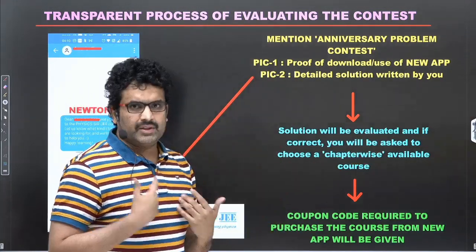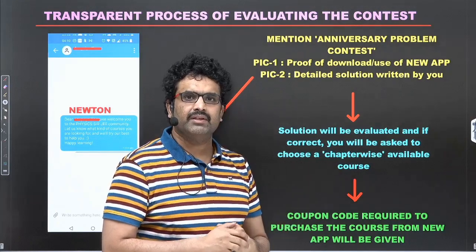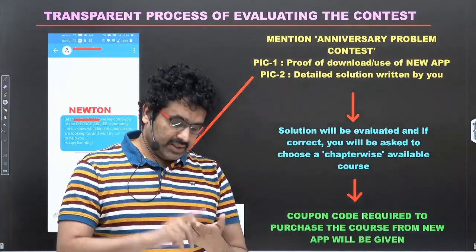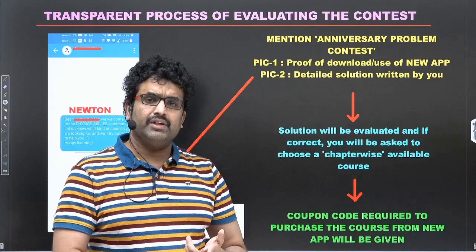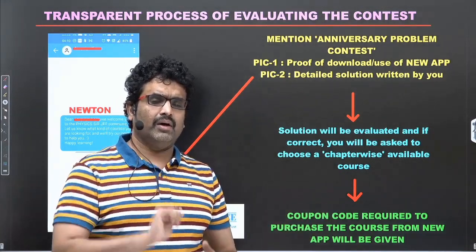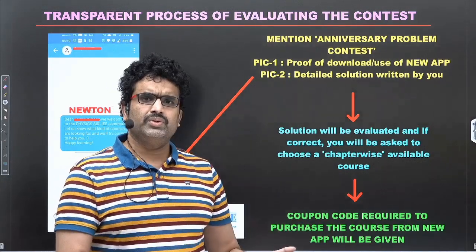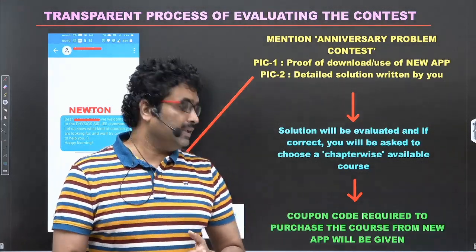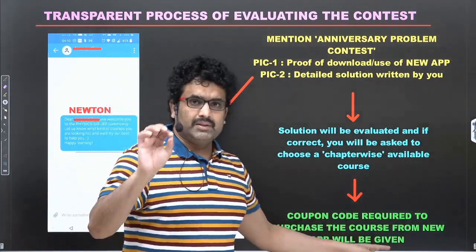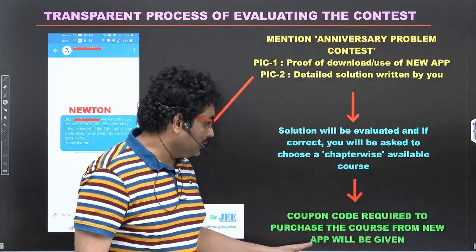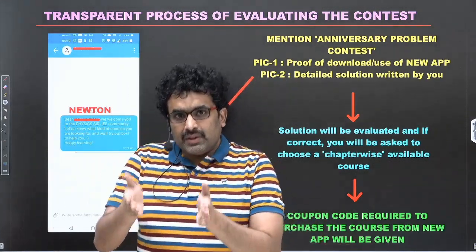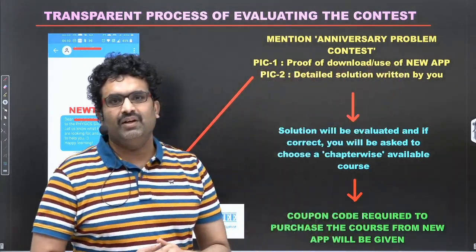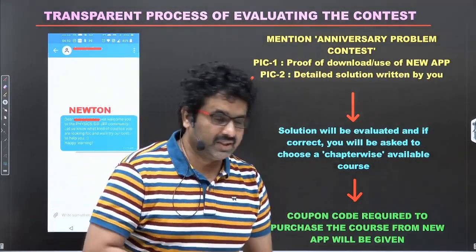Once the solution is evaluated by me and it is correct, you will be asked to choose a chapter-wise course available in the new app. Whatever chapter-wise courses are available — whether it is a detailed course of 2024 or 2025, or a crash course — any chapter-wise course, you can point out irrespective of what the price is, whether it's 2000, 2500, or 800 rupees. You will be given a coupon code and can purchase it from the new app.